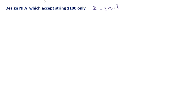Hi everyone, this session is about designing Non-deterministic Finite Automata. Let's get into the examples. The first one is designing an NFA which accepts the string 1100 only — that means the NFA should accept only the string 1100.